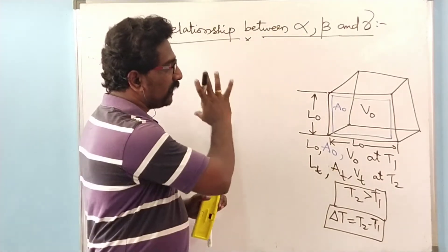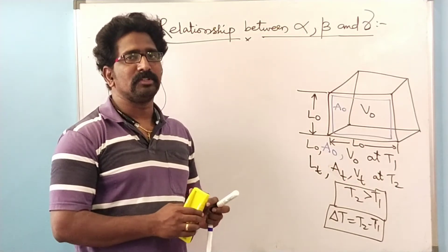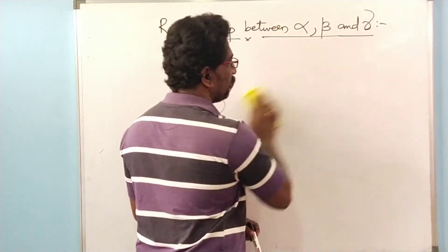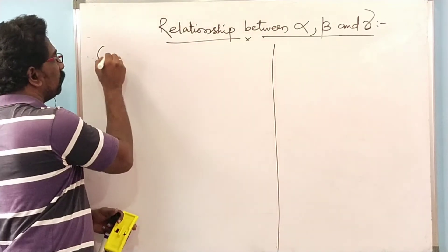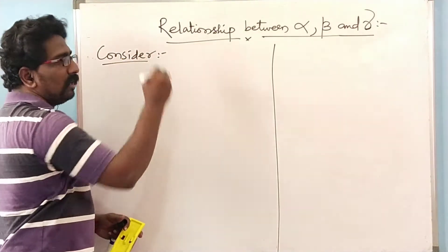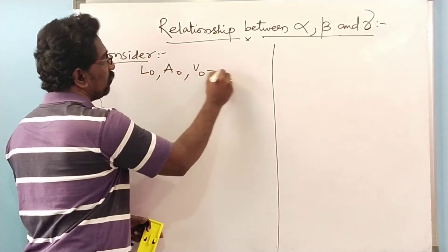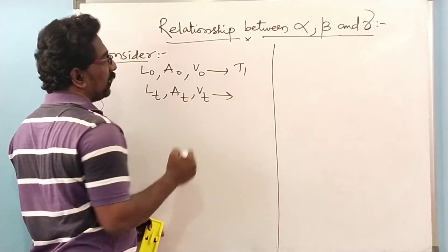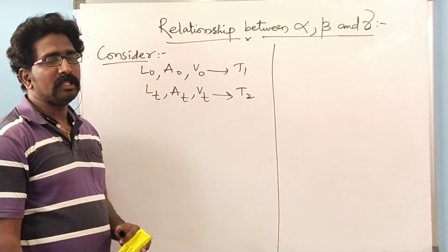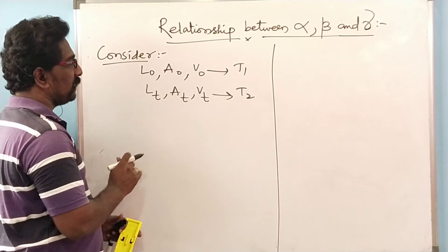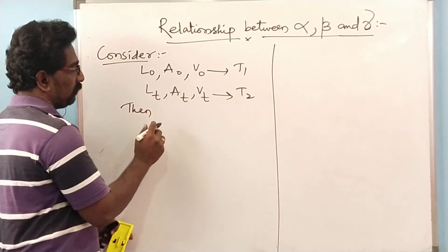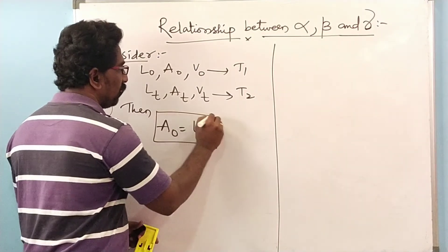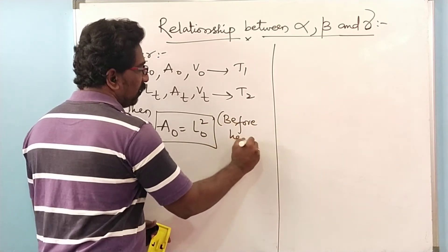These are our assumptions for this particular cube. Now let us start the derivation for the relationship between alpha, beta, and gamma. We note that A-naught is equal to L-naught squared — this is the area of each face of the cube before heating. This is our equation number 1.